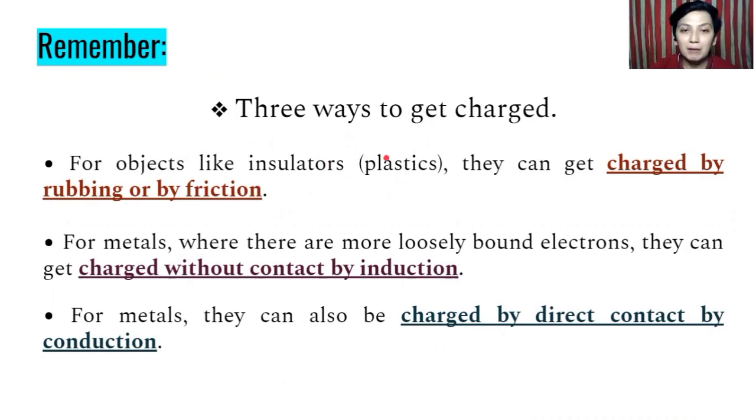So they can get charged by rubbing or by friction. So usually those plastics, those rubbers, they can be charged by friction or rubbing. For metals or conductors where there are more loosely bound electrons, they can get charged without contact by induction. And the last one is for metals again, they can also be charged by direct contact by conduction. So we have charging by friction or rubbing, charging by induction, and then charging by conduction. That's how you differentiate them.